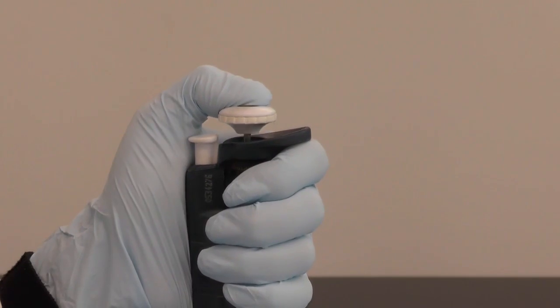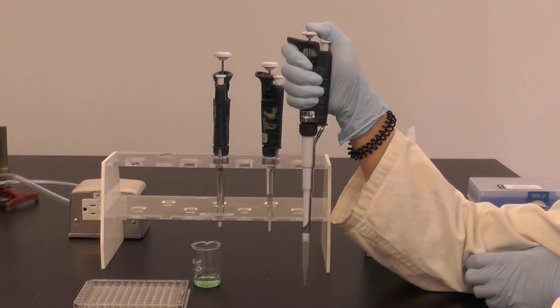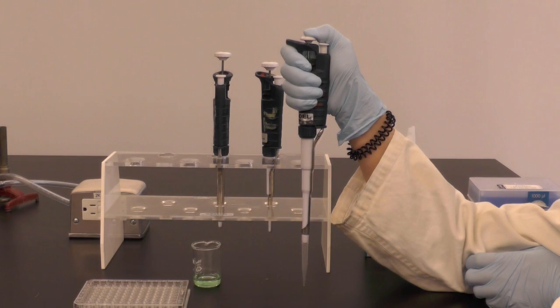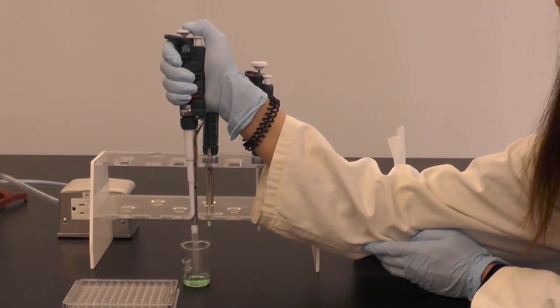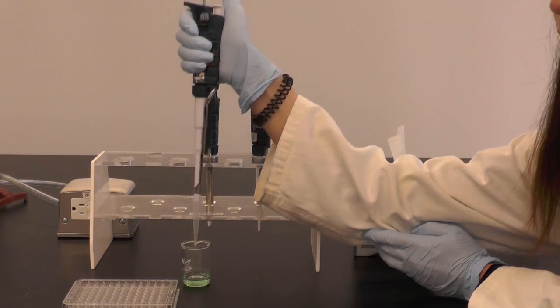As mentioned before, pipetment pipets have two stops. To reverse pipet, push the push button to the first stop and push a bit beyond the first stop but not all the way to the second stop. Then insert the tip into the liquid and slowly release the push button to draw up the liquid.